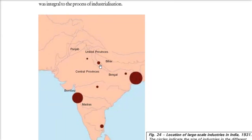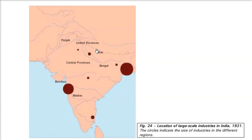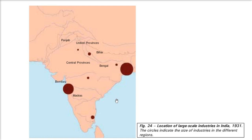This picture shows the location of large-scale industries in India. The size of circles indicates the amount of industries. Bengal had the highest, then Mumbai, then Uttar Pradesh (United Provinces), Madras, and Punjab. This was the distribution at that time.